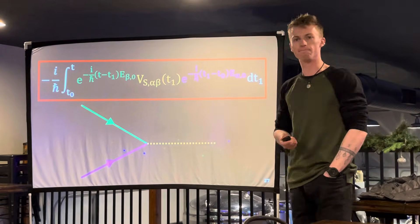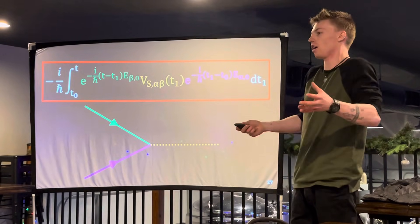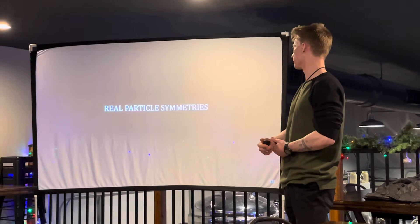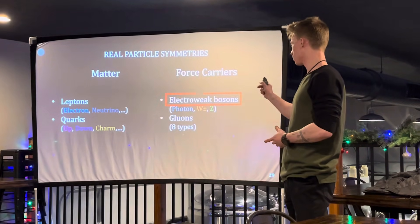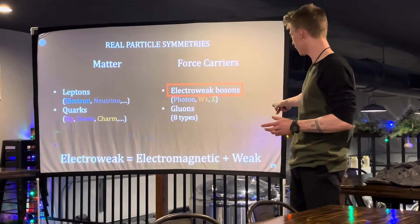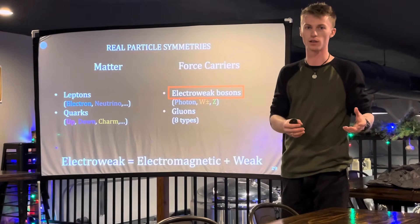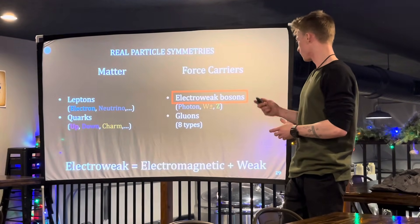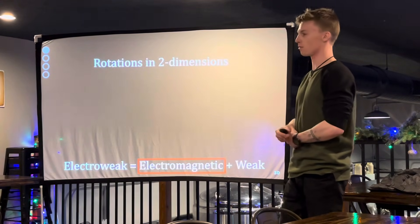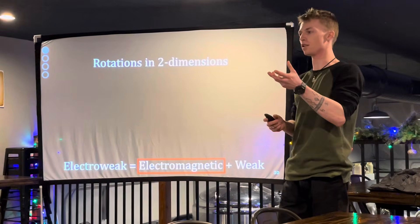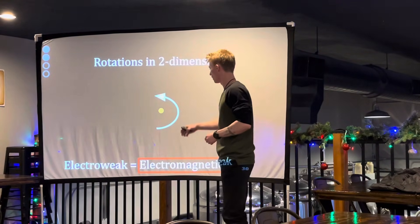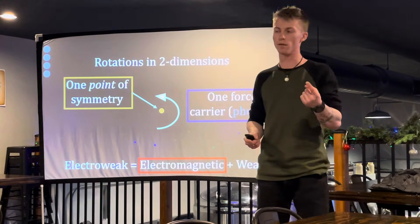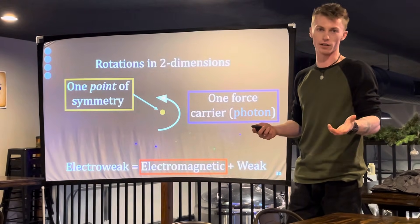Now that we know how symmetry works in particle physics, let's talk about what some real symmetries are. We're going to focus on electroweak — electromagnetic plus weak force. It turns out those two separate forces are really the same force. For the electromagnetic part, it has a symmetry where you rotate in two dimensions, and there's only one axis of symmetry. That means there's one boson — and it turns out that boson is the photon, which is what we see as light.